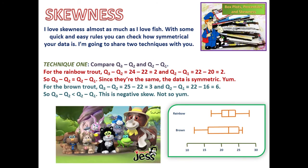I love skewness almost as much as I love fish. With some quick and easy rules, you can check how symmetrical your data is. I am going to share two techniques with you. Technique 1: compare Q3 minus Q2 and Q2 minus Q1. For the rainbow trout, Q3 minus Q2 is 2, and Q2 minus Q1 is 2. So Q3 minus Q2 equals Q2 minus Q1. Since they're the same, the data is symmetric. Yum.